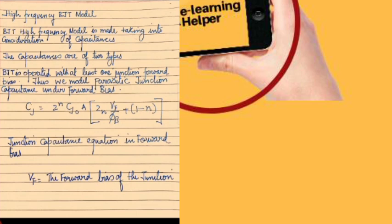There are two types of capacitances operating in the BJT. The BJT is operated with at least one junction forward biased, so we model a parasitic junction capacitance under forward bias. When the voltage is applied, there will be a parasitic junction capacitance CJ developed. The junction capacitance is represented by the equation: CJ = 2N · CJ0 · A · (2N · VF / (5E + 1))^(-N), where VF is the forward bias of the junction.